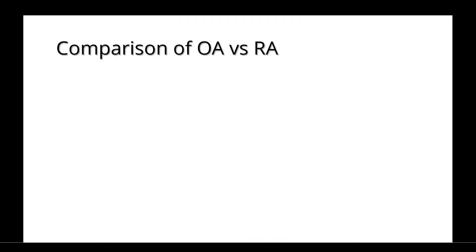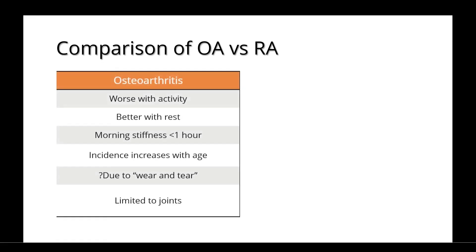When further comparing osteoarthritis and rheumatoid arthritis, osteoarthritis usually gets worse with activity and better with rest. It presents with morning stiffness that lasts under one hour, and has an incidence that increases with age. It's commonly thought to be due to wear and tear of the joints, but this isn't entirely true, and it is limited to the joints without causing further systemic problems.